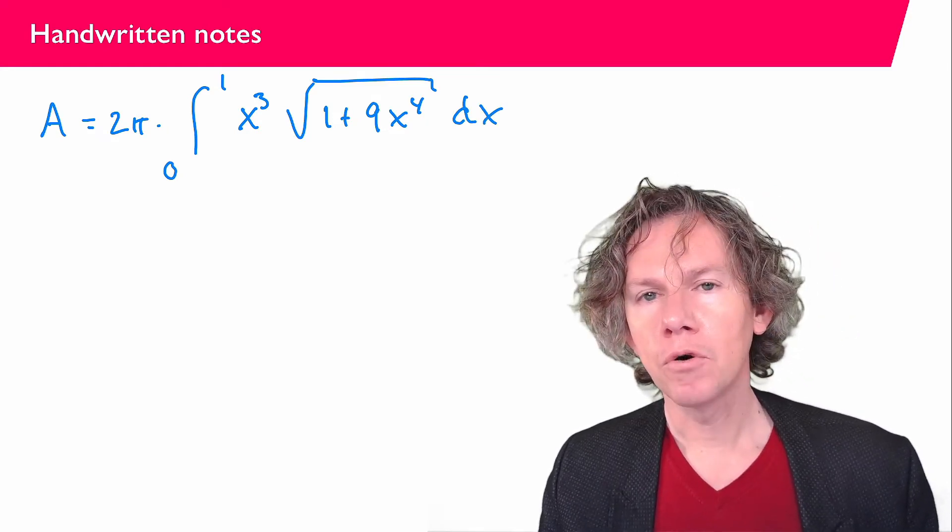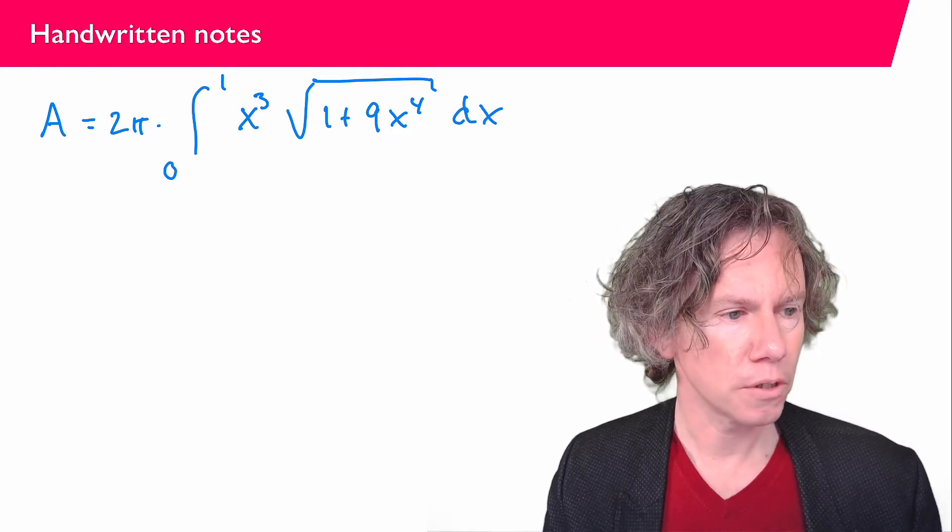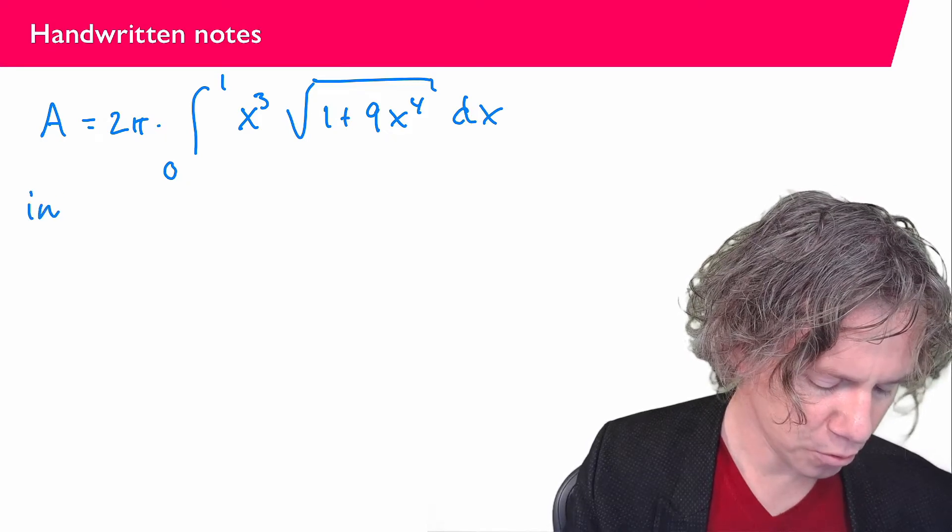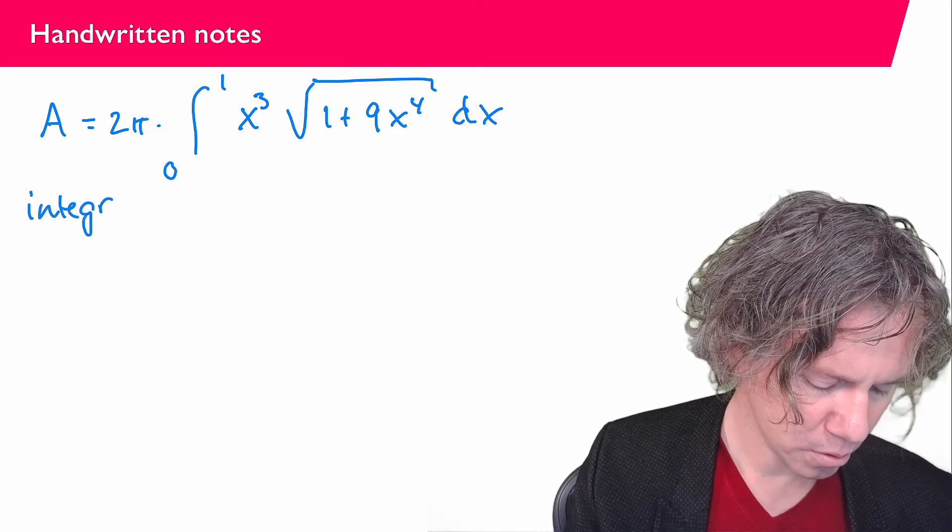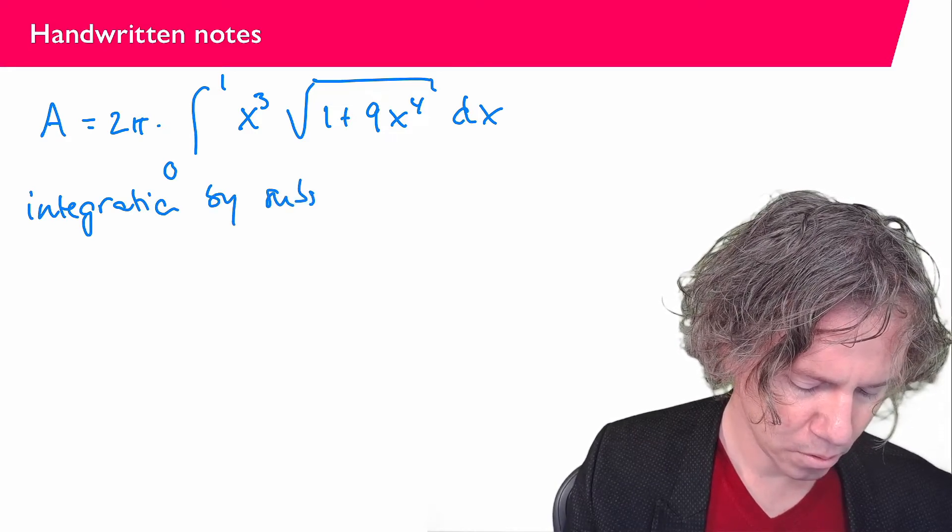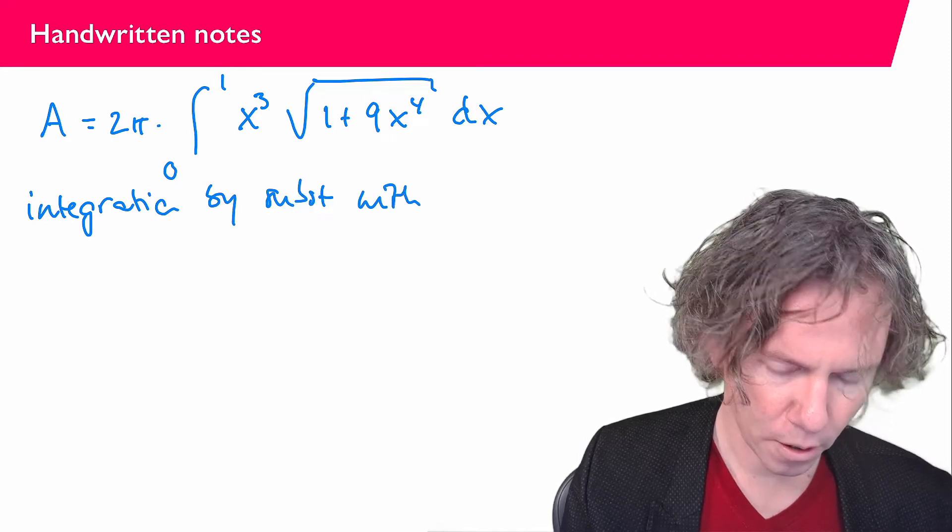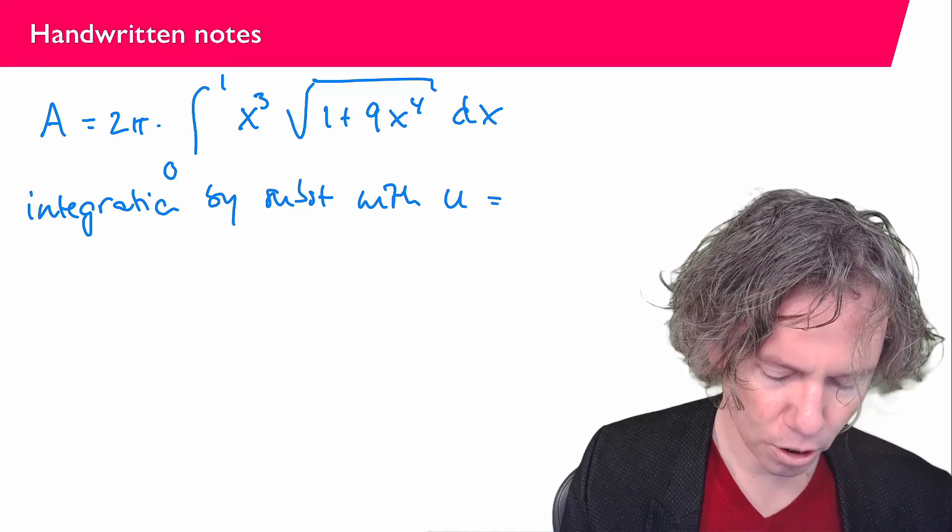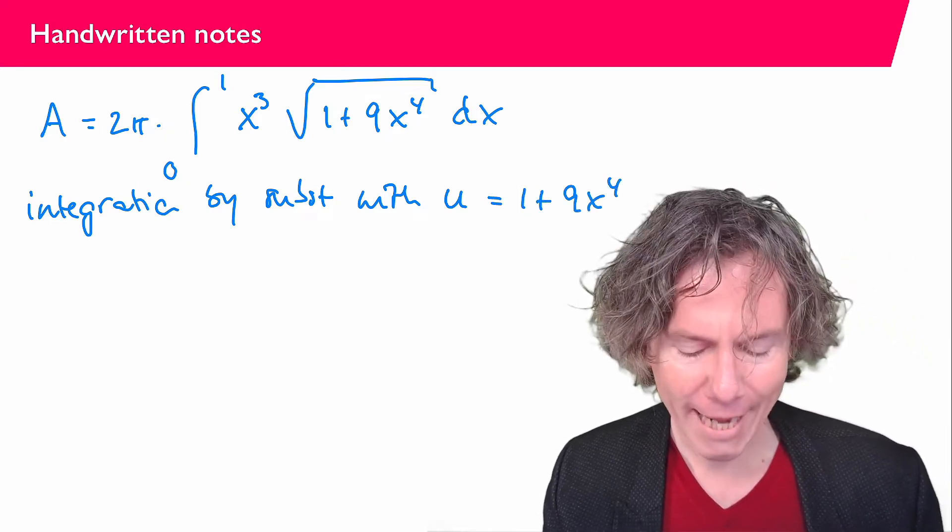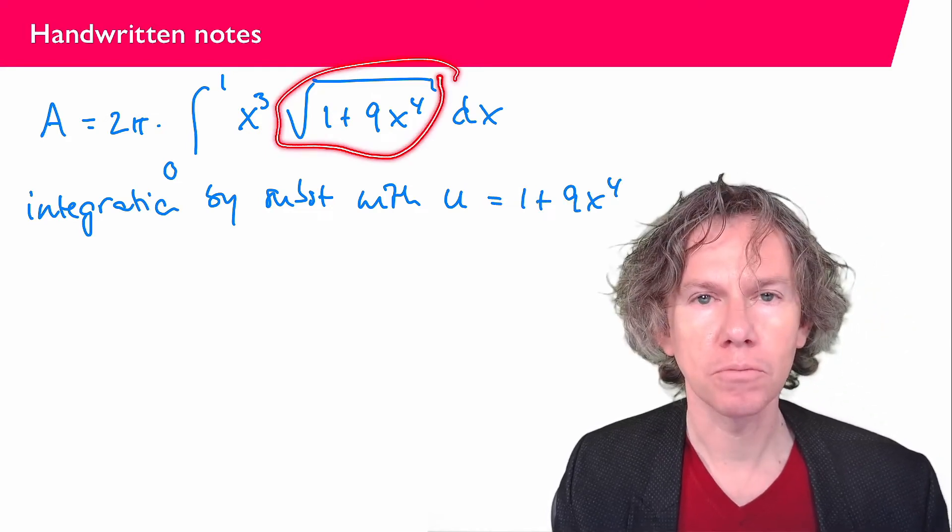Now if you recall from calculus, then this is an integral that you can do using substitution. So we need to do integration by substitution. And we are going to try u equals 1 plus 9x to the power 4. And the reason for this is that then the whole square root becomes the square root of u.